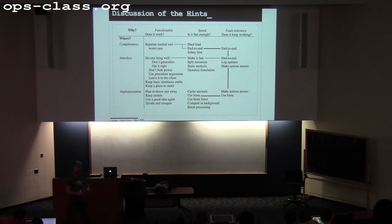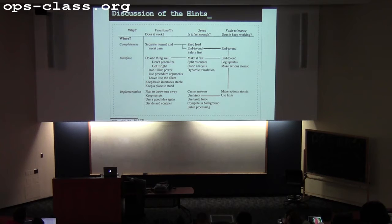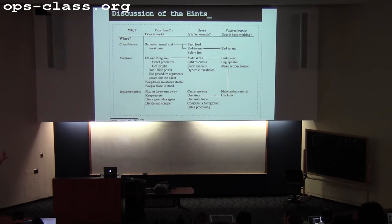We broke down the discussion in three axes: completeness — does the system accomplish everything it's supposed to? Interface — what is the interface the system provides? A system that doesn't provide an interface is a closed world inaccessible to the outside. All the interesting systems you're going to build will provide an interface; otherwise they don't do anything. And implementation — how is the system actually built internally?